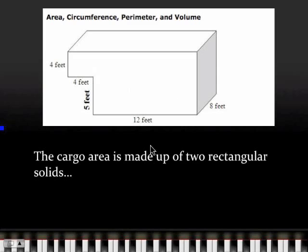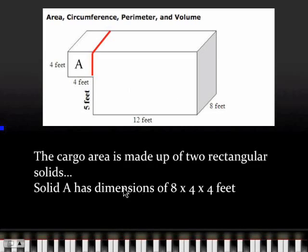This cargo area is made up of two rectangular solids. Solid A - I'll go ahead and draw a line right down where the one solid would be joined here. Solid A has a length of eight feet, and then its width is four feet, and its height is also four feet. So eight by four by four for solid A.